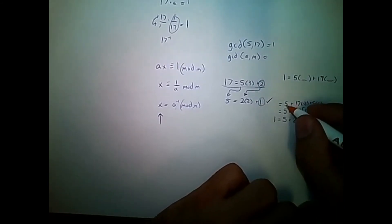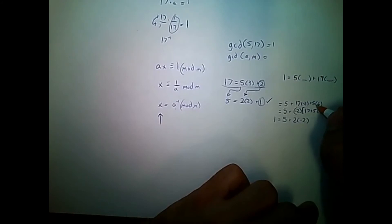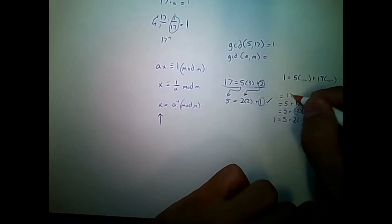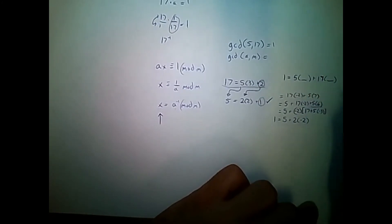And there's another 5 here which I can group with these 6 5s over here. So, let me go ahead and do that. 17 negative 2 plus 5 to the 7.